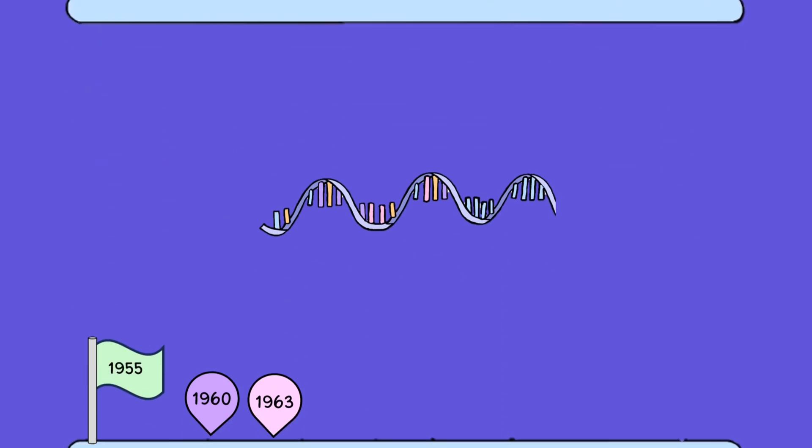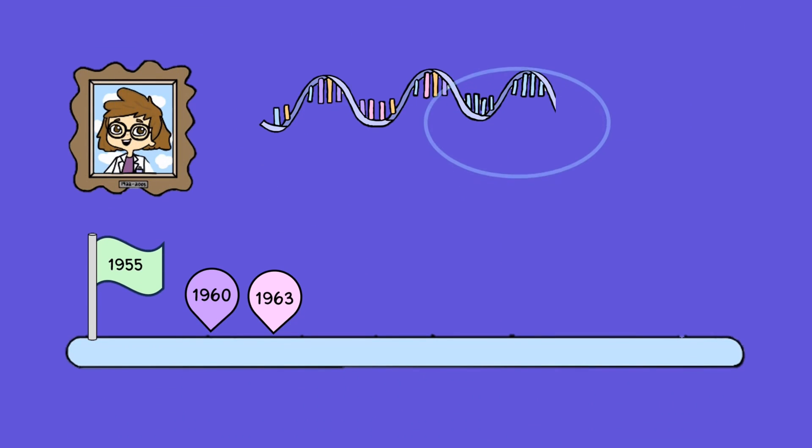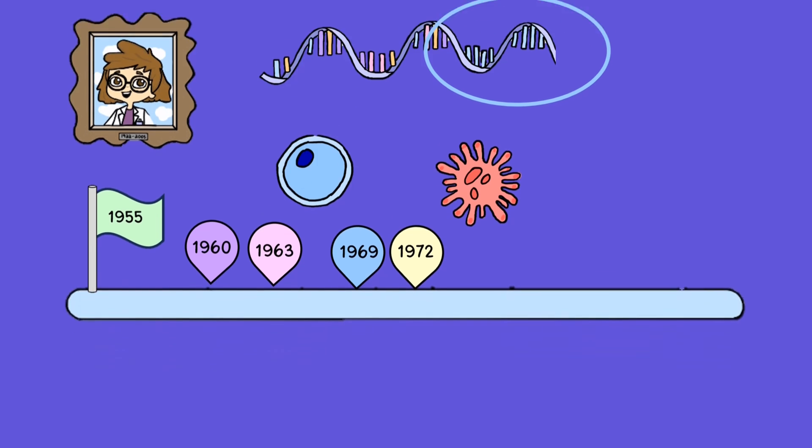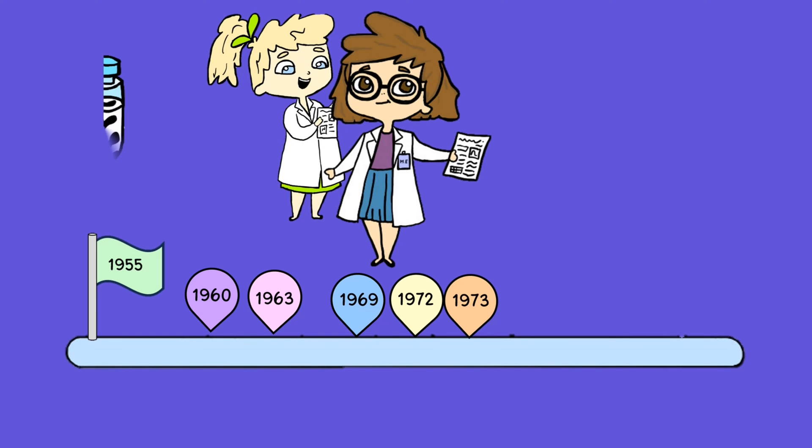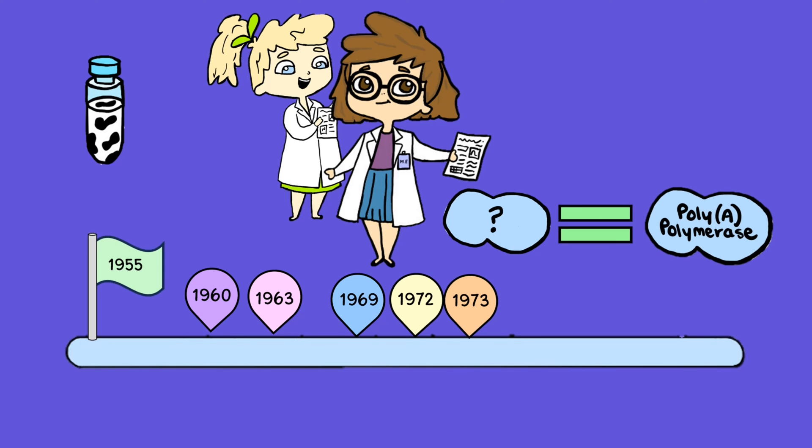Following this, Edmonds isolated adenosine-rich polynucleotides, finding them both in cellular and viral RNAs. In 1973, Winters and Edmonds purified poly-A polymerase from calf thymus tissue, confirming the characteristics of poly-A polymerase enzyme, adding poly-A tails to eukaryotic mRNAs.